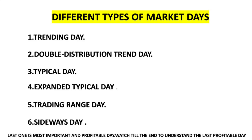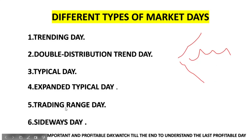Hello guys, welcome to another video. In previous videos we saw pivot points, CPR points, and different types of support and resistance which we can use in day trading. In this video I am going to explain different types of market days which will repeatedly appear in your chart. There are six types of trading days: trending day, double distribution trend day, typical day, expanded typical day, trading range day, and sideways day. I will explain all these with charting examples and show how you can make profit.